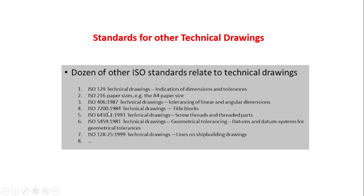ISO 406:1987 covers tolerancing of linear and angular dimensions. ISO 7200 covers the title block standard used in technical drawings. ISO 6410:1993 covers technical drawings for screws and thread fonts. ISO 5459 covers GD&T datum terms and the datum system for geometrical tolerances — very important. ISO 128-25 also relates to technical drawing standards.